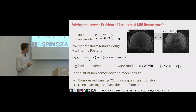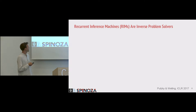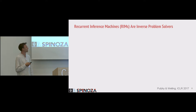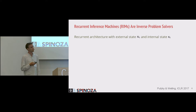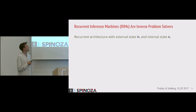Using deep learning algorithms, we can learn the prior from data instead, and there are already algorithms out there that do this. We also learn the prior from data, and we use an algorithm called recurrent inference machines, first proposed by Patrick Putzky as general inverse problem solvers. Here we apply them to the problem of accelerated MRI reconstruction. The recurrent inference machine uses a recurrent architecture with two states: one external state, which is the image approximation, and one internal state, as commonly used in recurrent neural networks, and both are maintained and updated by update equations.